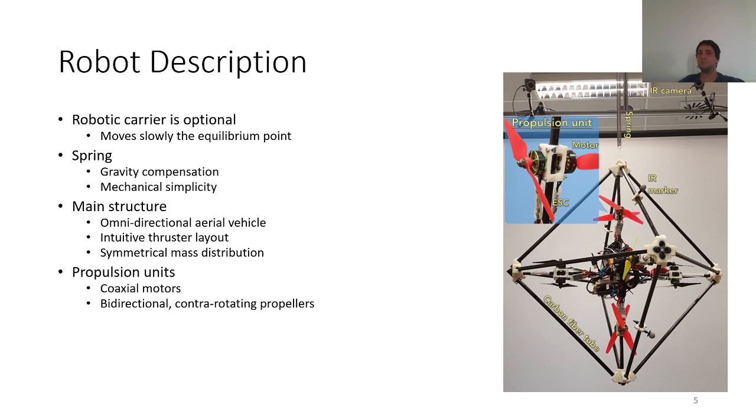If we want to be able to control the six degrees of freedom with six propulsion units, these propulsion units need to be bidirectional. The easiest way to do this would be using a bidirectional motor with symmetrical propellers. However, at the beginning of my thesis we were ignoring if the propeller dynamics, so the drag due to aerodynamic friction, the reaction torque due to the acceleration of the rotor and the gyroscopic effect were important or not. That's why we decided to work with coaxial motors with contra-rotating propellers. In this way we can cancel these propeller dynamics.